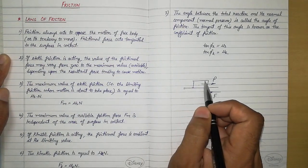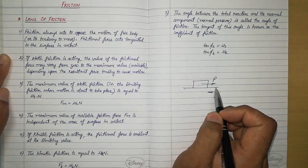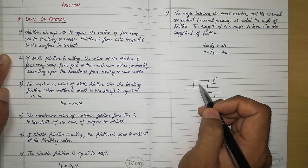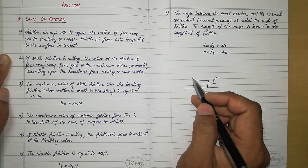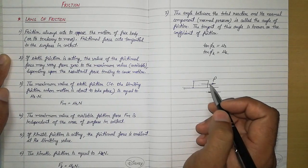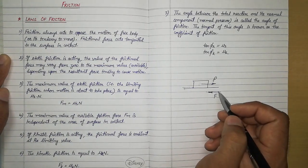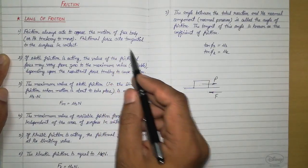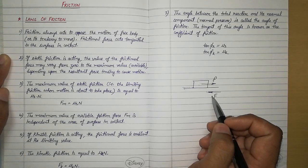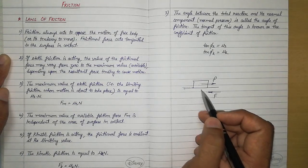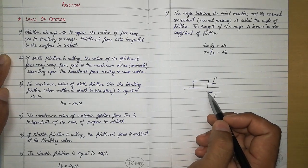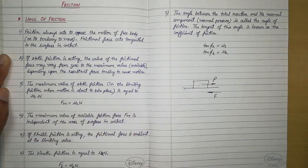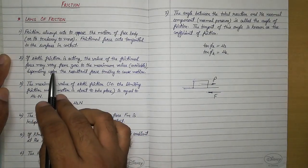Suppose we have a rigid body resting on a surface and some force is applied on it. The tendency of that force is to move the body towards the right, but the body is not moving because frictional force develops between the contacting surfaces. From the first law, this friction force acts opposite to the direction of motion and is always tangential to the surface.